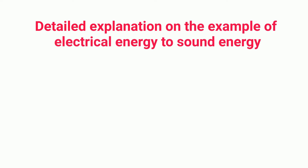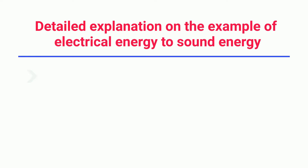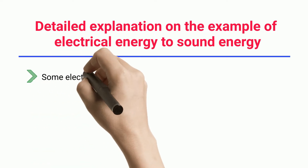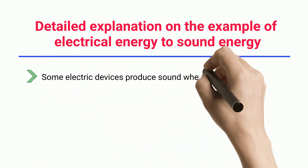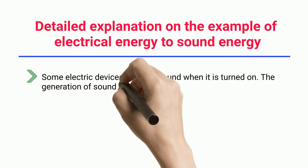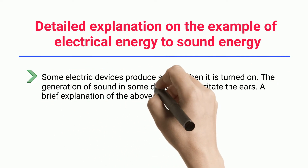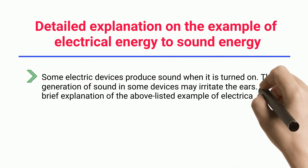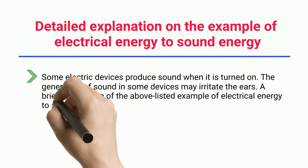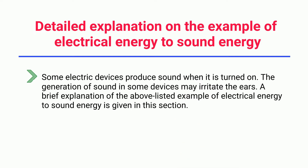This section provides a detailed explanation on the example of electrical energy to sound energy. Some electric devices produce sound when turned on; the generation of sound in some devices may irritate the ears. A brief explanation of the listed examples of electrical energy to sound energy is given here.